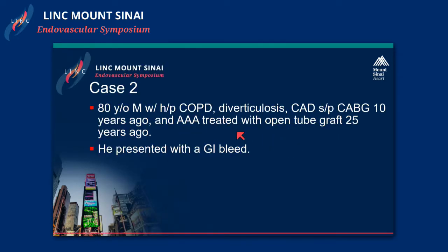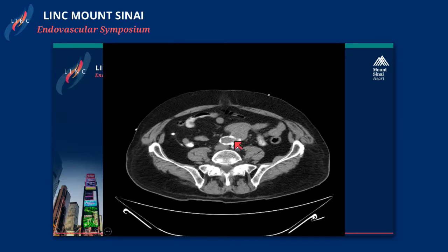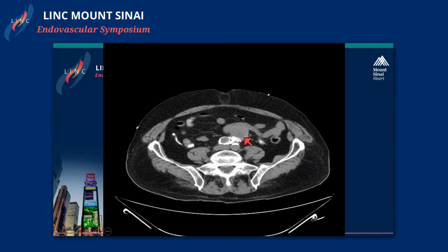Another patient I want to present is an 80-year-old gentleman with a history of COPD, who had a CABG and an AAA repair managed open 25 years ago. He presented with a GI bleed. This is his initial CAT scan showing the distal aorta and the aortic bifurcation. At the distal anastomosis — this was a tube graft — it was in continuity with the bowel.